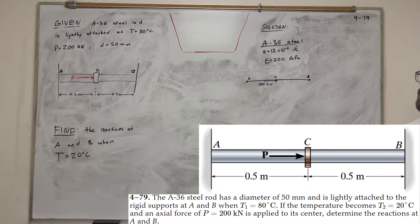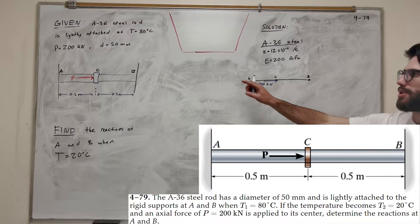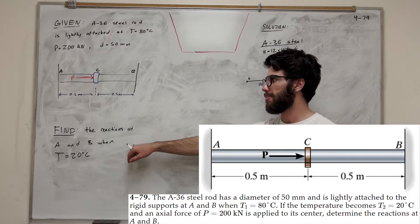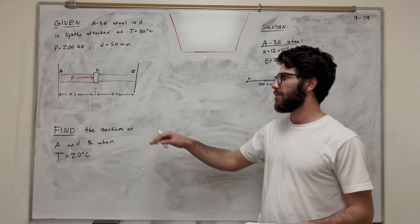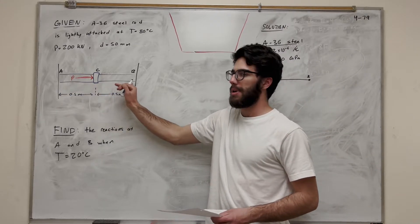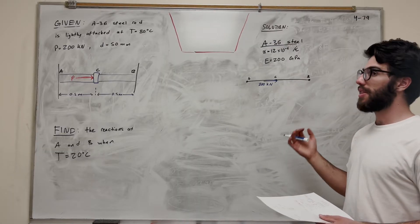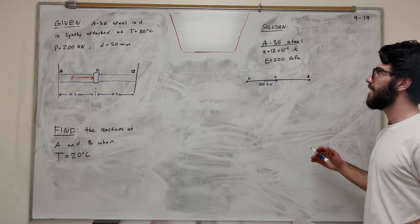So we have this A36 steel rod, and we put it in here at 80 degrees Celsius, and then we're applying this force P here at C, and we want to know the reactions at A and B when our temperatures change to 20 degrees. A and B are going to have reactions because we're applying force and we're changing the temperature. A lot of things are going to change. So let's go ahead and solve for that.